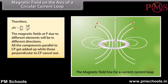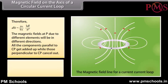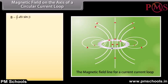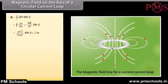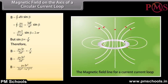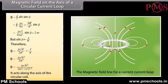Components of dB parallel to the axis (CP) add up while those perpendicular cancel out. The total magnetic field at P due to the whole current loop is B = ∮dB·sinβ. Substituting values: B = (μ₀I / 4π·A²) · sinβ · 2πR. Since sinβ = R/A, the total field becomes B = μ₀IR² / 2A³, also written as B = μ₀IR² / 2(R² + x²)^(3/2). This field acts along the axis of the circular coil.